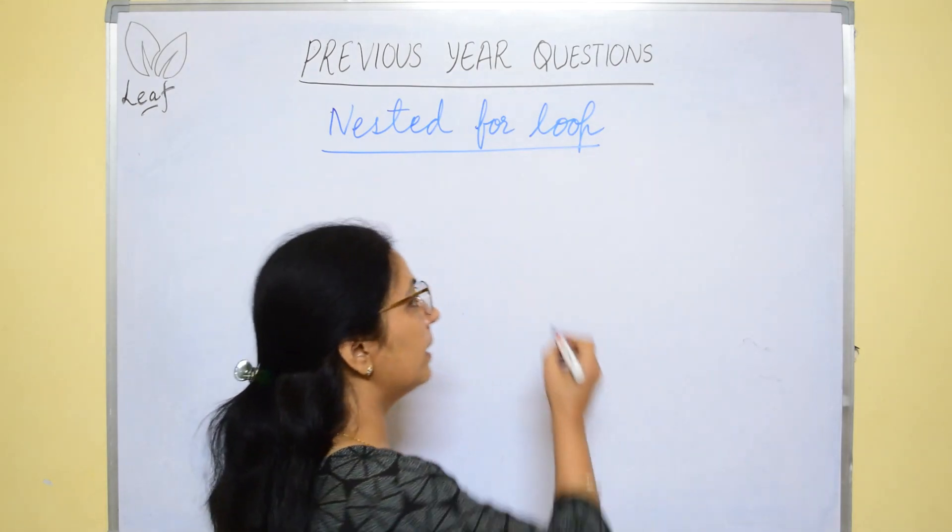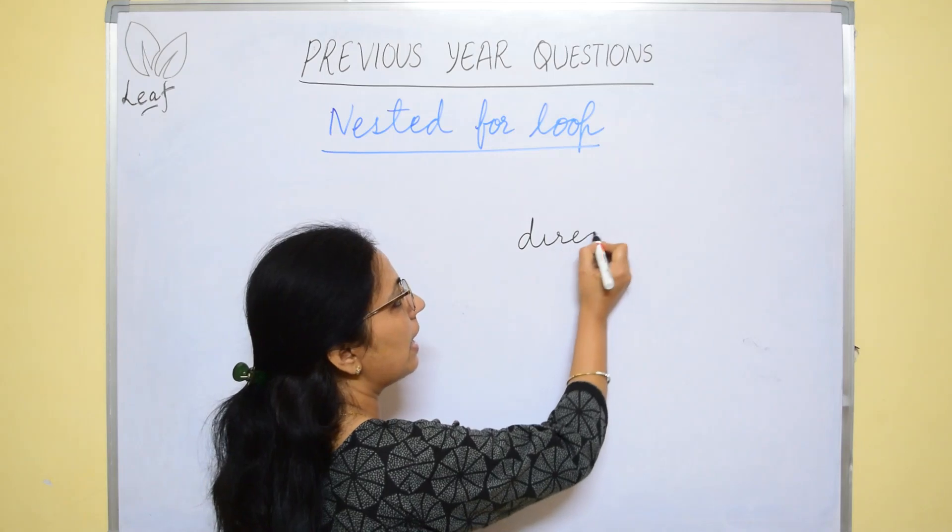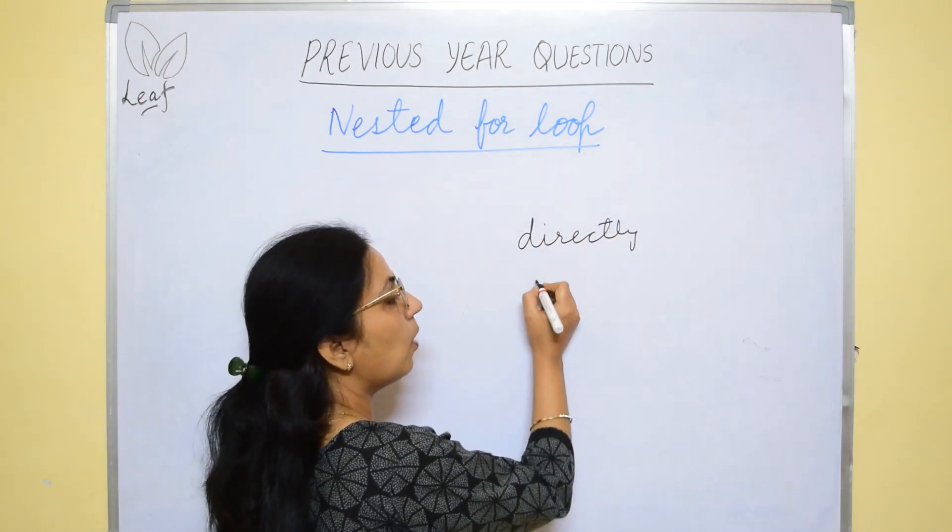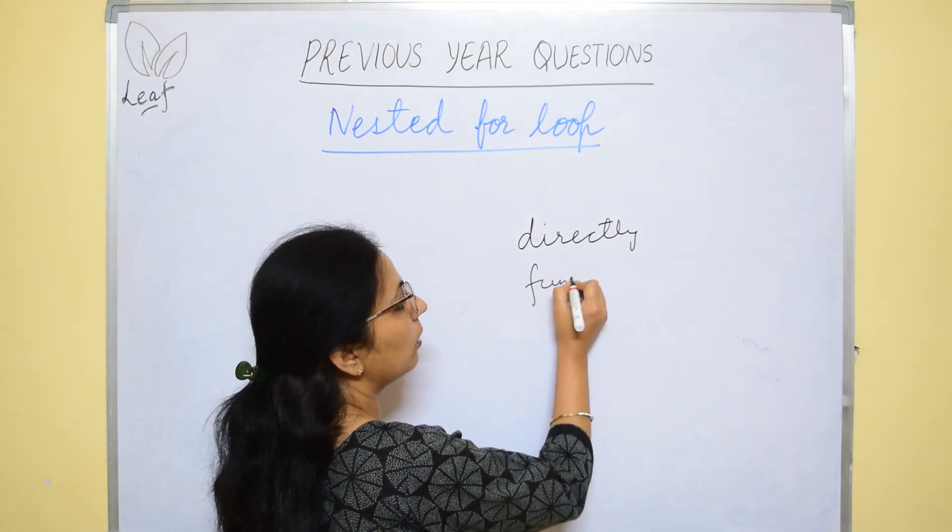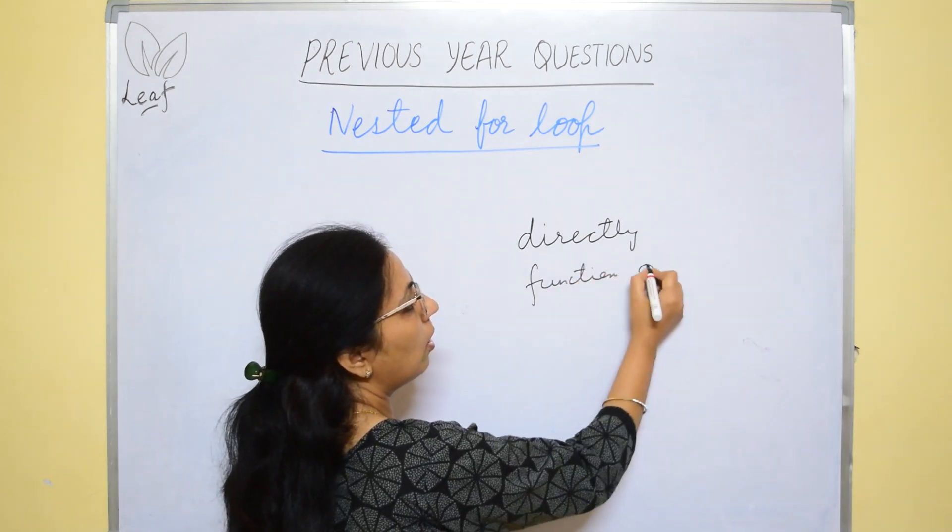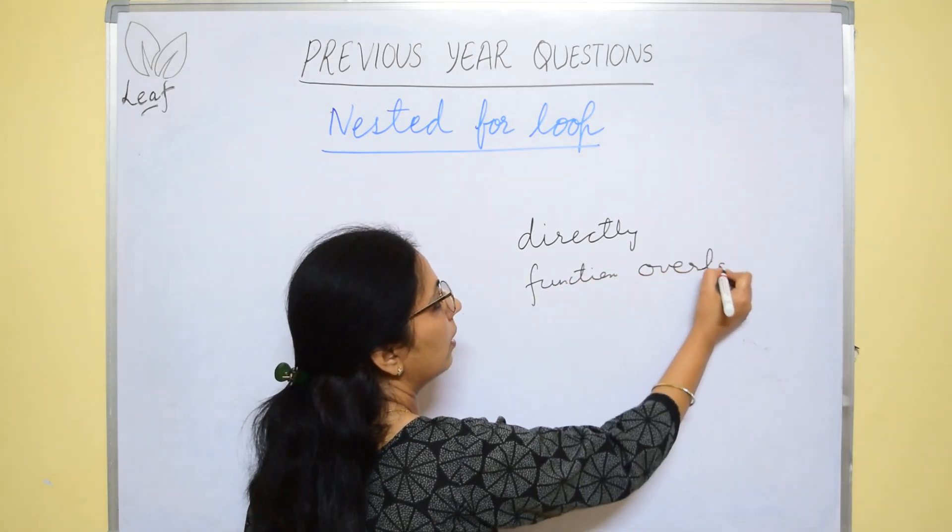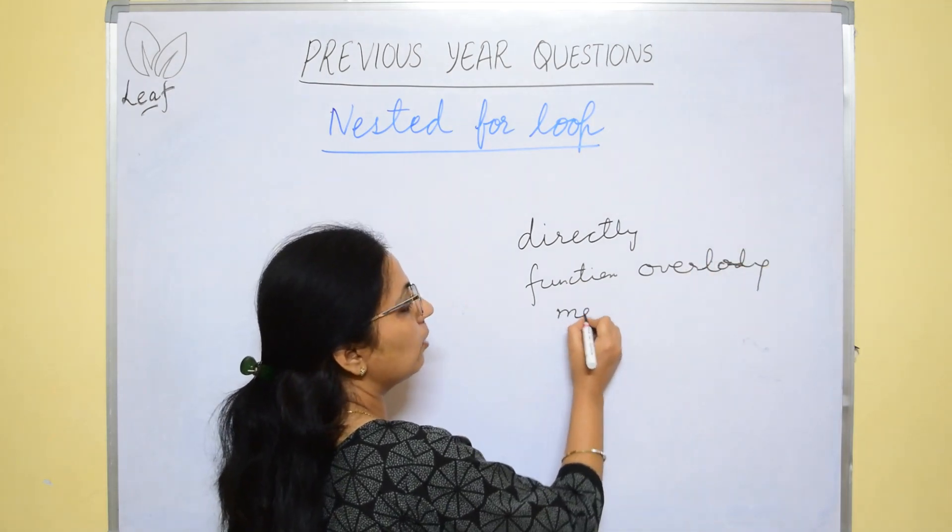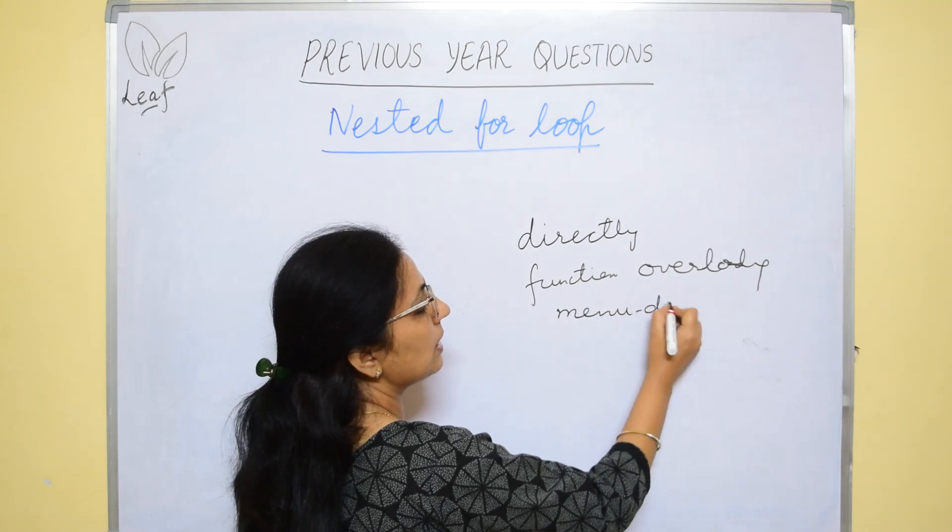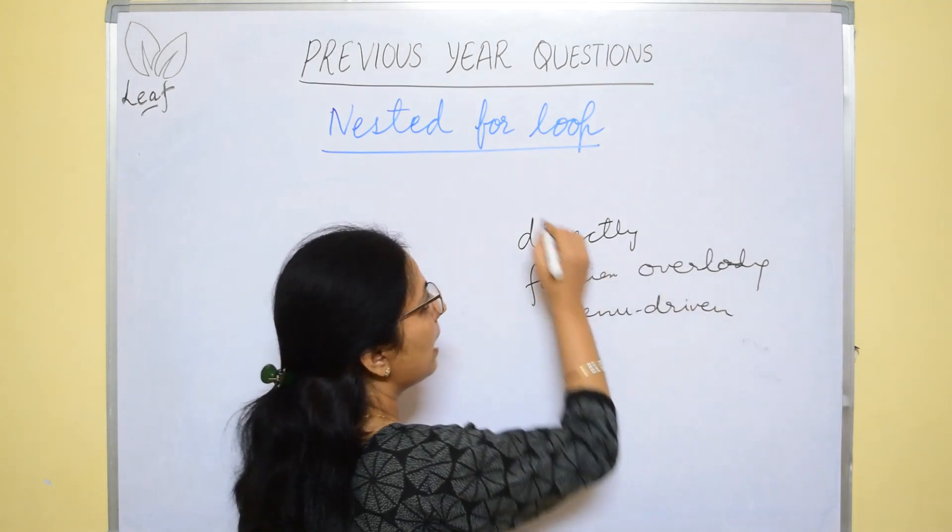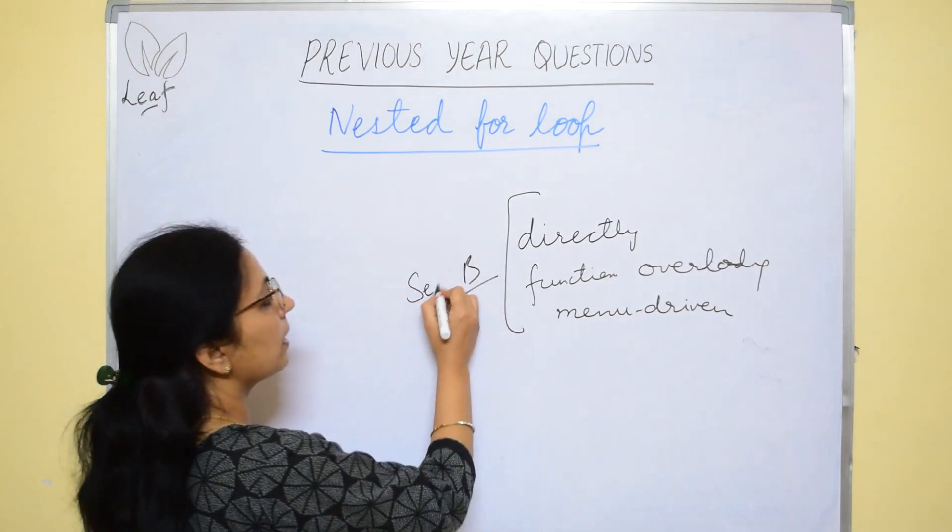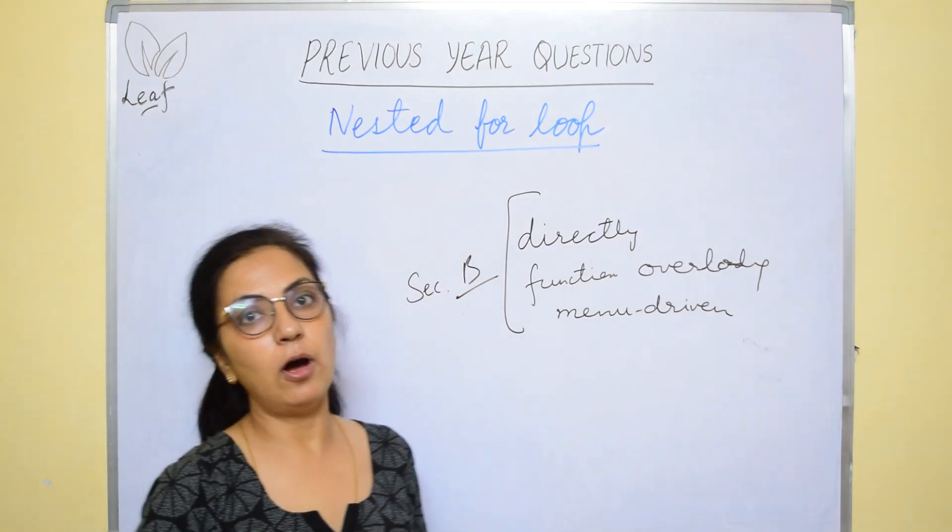So we have either directly the questions are asked in section B or they can be with function overloading or with menu driven. So these three types of questions can be asked in section B from the topic nested for loop.